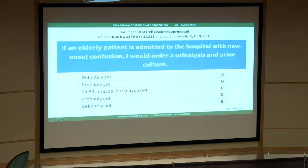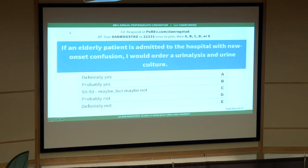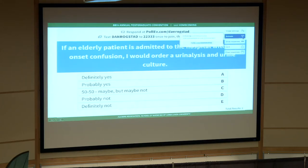If you have a computer, cell phone, or tablet, you can participate in this Poll Everywhere poll by going to PollEv.com with my name, or by texting this number to join. The first question is: if an elderly patient is admitted to the hospital with new onset confusion, would you order a urinalysis and a urinary culture? I'll give a few minutes to see if people can log in.